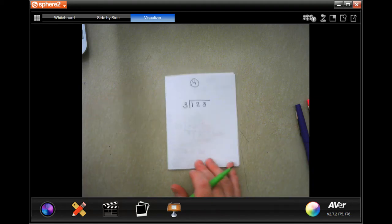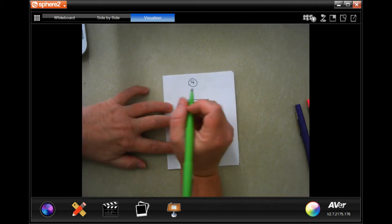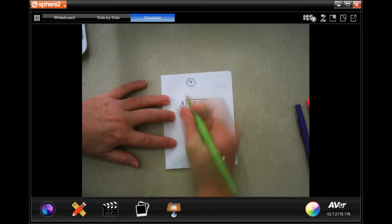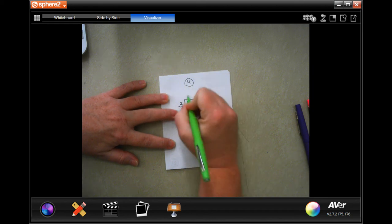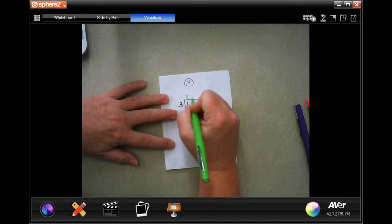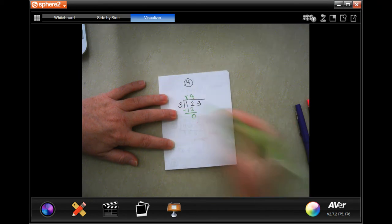Number 4 says Madeline can type 3 pages in one hour. How many hours will it take her to type a 123-page report? Well, Madeline's probably going to go a little bit crazy because 123 pages is a lot to type for anyone. 3 is not going to go into 1, 1 is too small. 3 will go into 12 four times.